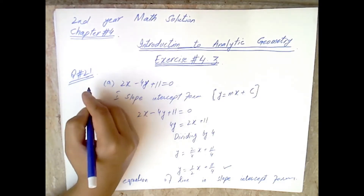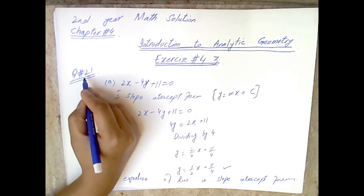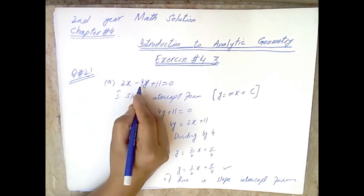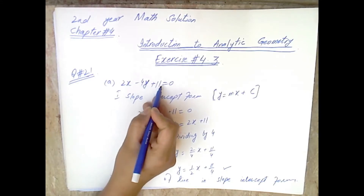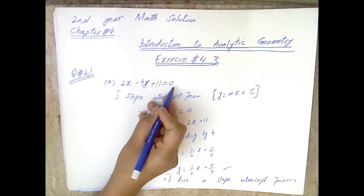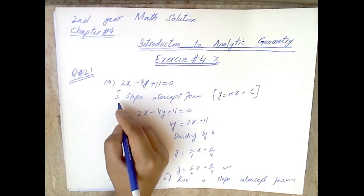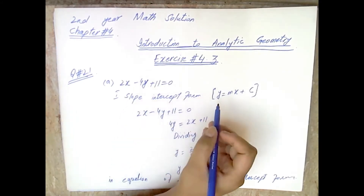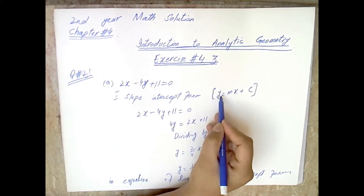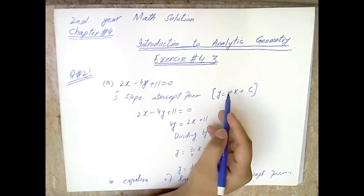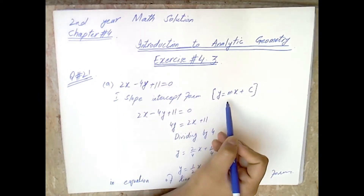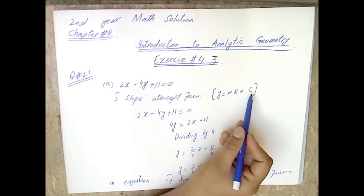The first equation for part (a) of Question 21 is: 2x minus 4y plus 11 is equal to zero. The first form we need to find is the slope-intercept form. Slope-intercept form is written as y = mx + c. We need to rearrange this given equation into that form.